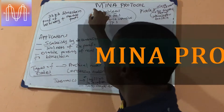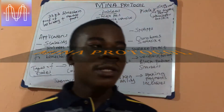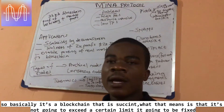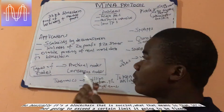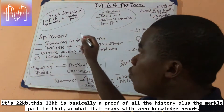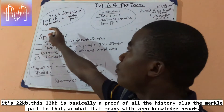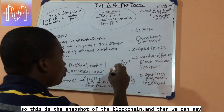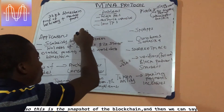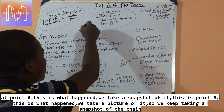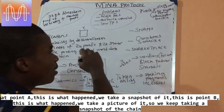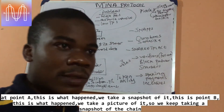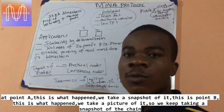As a result of that resource intensity, what I present to you today is the Mina Protocol. The Mina Protocol is a blockchain that is succinct — what that means is it stays small. It is available as just 20 kilobytes, and those 20 kilobytes are essentially a proof of all the history. With zero-knowledge proofs, you take a snapshot of the blockchain at a point in time, and then you take another snapshot, and you keep taking snapshots of the chain going forward.